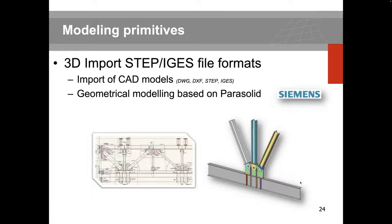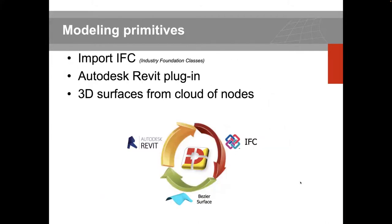You can either import geometry from third-party CAD programs or generate your model from within Diana's integrated environment. Supported formats include DWG, DXF, STEP, and IGS. You can also import IFC file format if you are using Revit. For terrain geometry, you can import a cloud of nodes and generate a base surface from them — allowing you to rebuild terrain geometry from point cloud data.